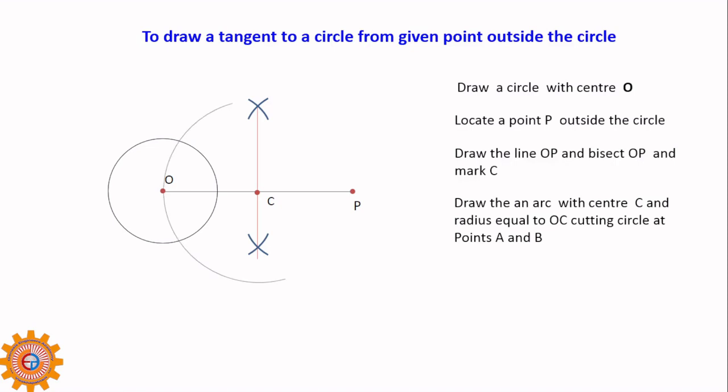That arc will cut the circle at two points A and B. Now connect the points A and P, and B and P. AP is one tangent and BP is another tangent. The point P can be located anywhere but it should be outside the circle.